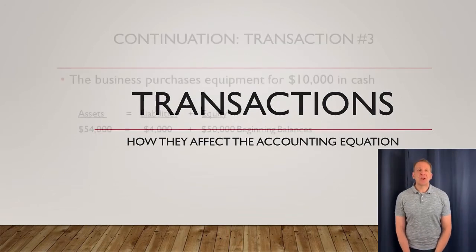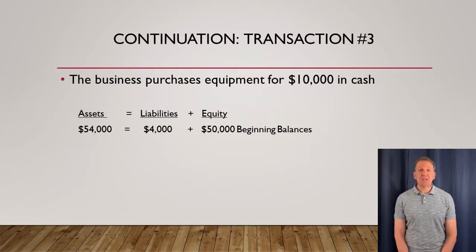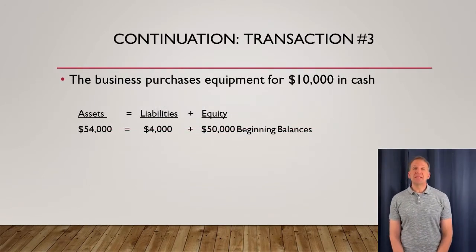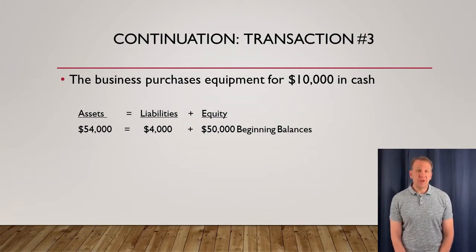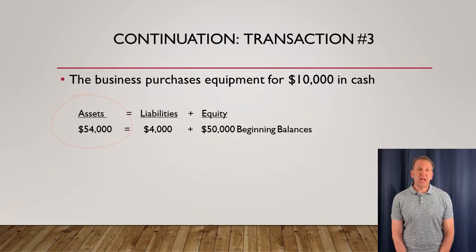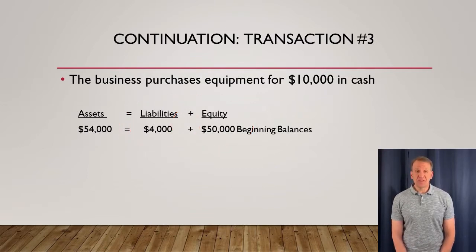Let's take a look at transaction number three. Before we do, you can see that we already have beginning balances of $54,000 in assets, $4,000 in liabilities, and $50,000 in the equity section. This carried over from the previous video.